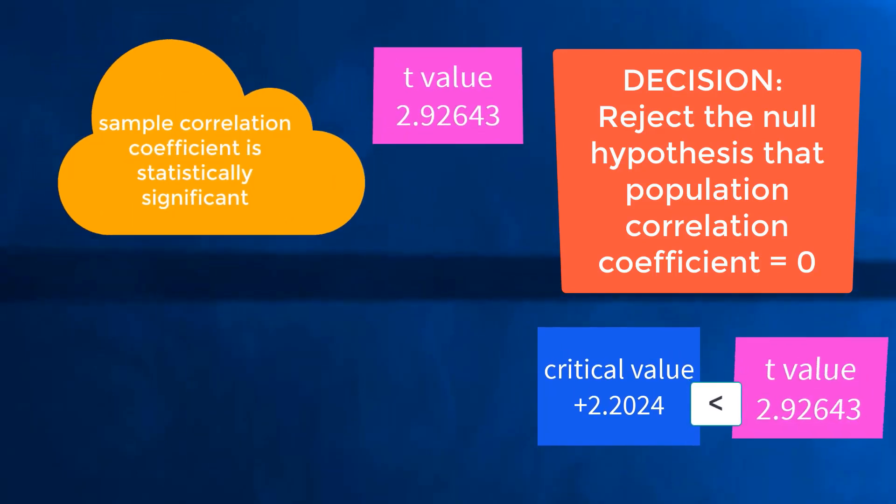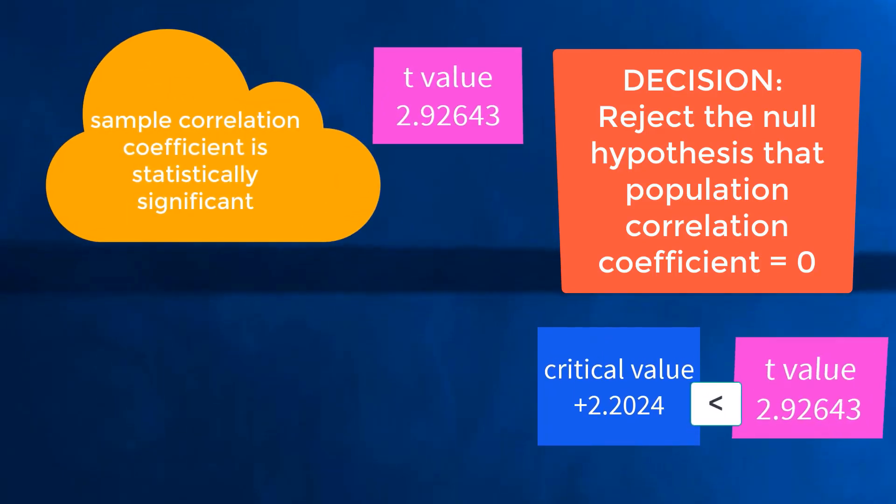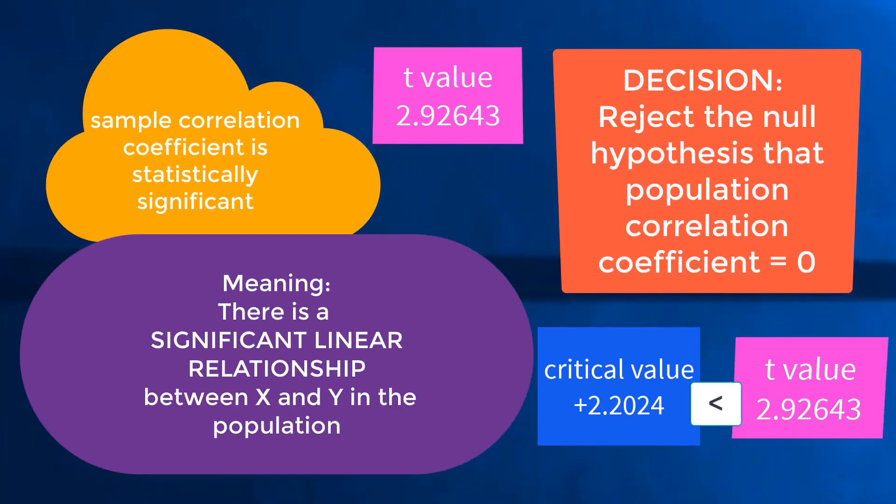The sample correlation coefficient is statistically significant. Therefore, there is a significant linear relationship between x and y.